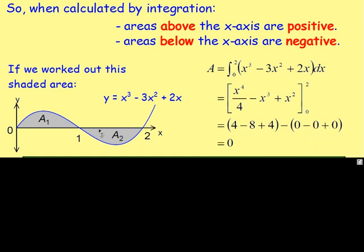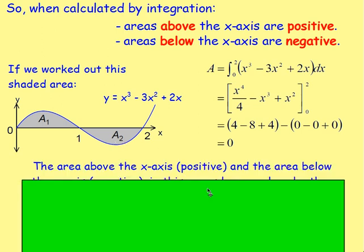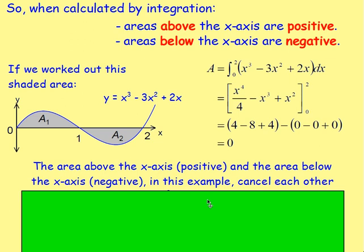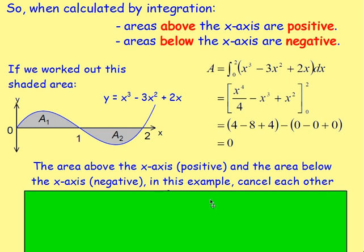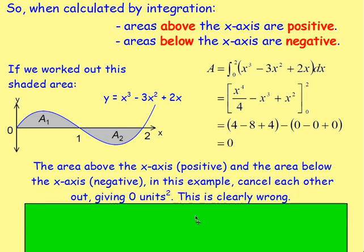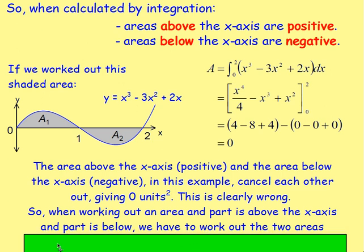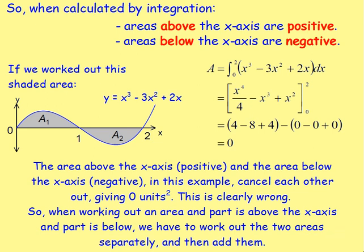What?! It's not 0. It's clearly not 0 — you can see it's not 0. We've got area 1 and area 2. The area above the x-axis is going to be positive, but the area below the x-axis is going to be negative. In this example, they're going to cancel each other out — one's positive, one's negative. You add them together and you're just getting 0, which is clearly wrong. So when part of the graph is above the x-axis and part is below, you have to split it up and work out the two areas separately, then add them together at the end.